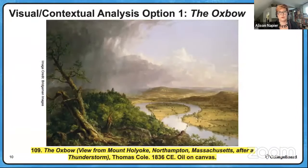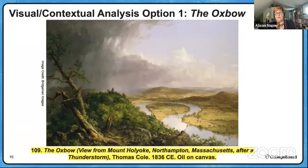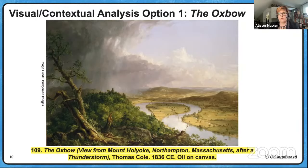Let's start with the Oxbow. During the 19th century, we see landscape painting elevated to a point of national pride. Thomas Cole is leading the Hudson River School of Landscape Painters, based in New York, and he is passionately involved in capturing the beauty of American wilderness. He's originally from Lancashire, England, and immigrates to the US in 1818, settling in Philadelphia before moving to Steubenville, Ohio, and eventually New York.